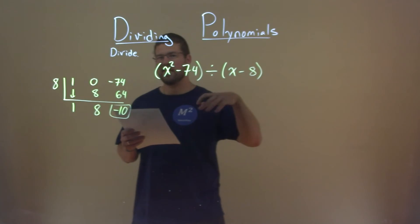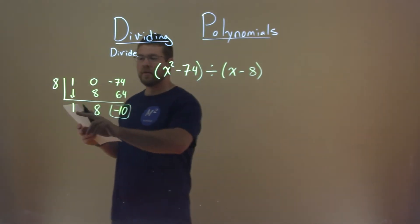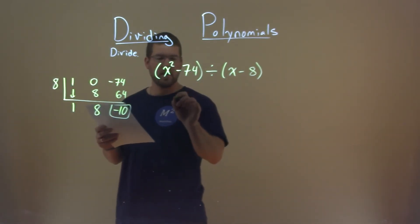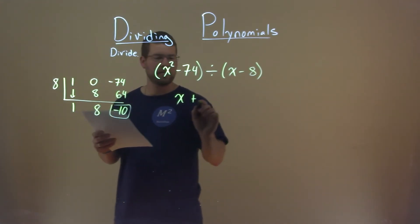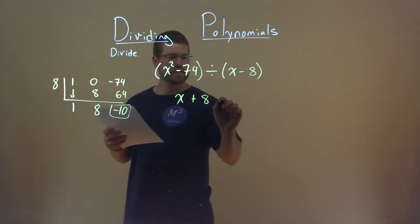Well, x squared divided by x is x to the first power, and so this 1 is its coefficient. So we just have 1x right there. Then, we add the 8 minus the 10, the remainder,